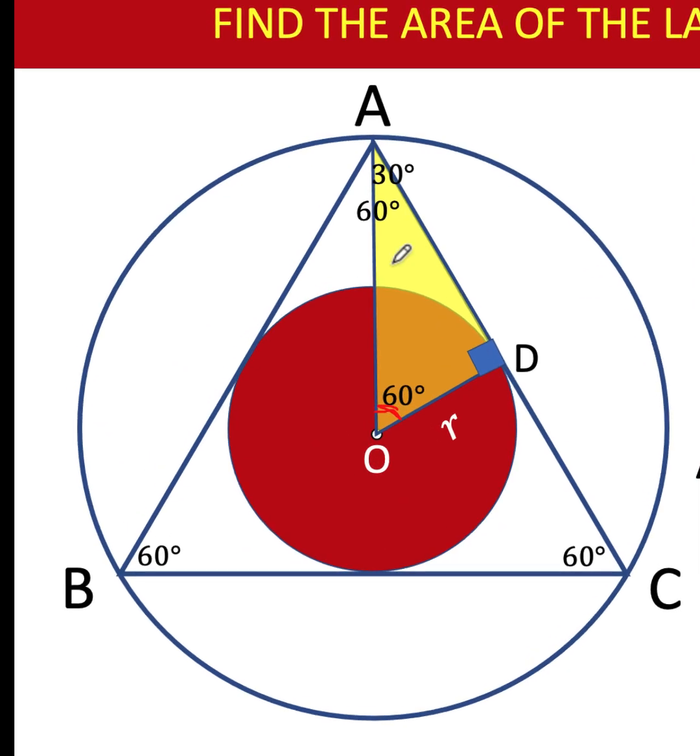Applying that in our yellow triangle, if the length of the side opposite this 30-degree angle is r, it follows that the hypotenuse AO is twice this r, or 2r.